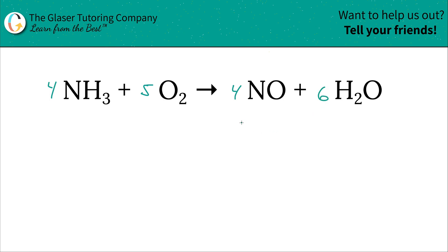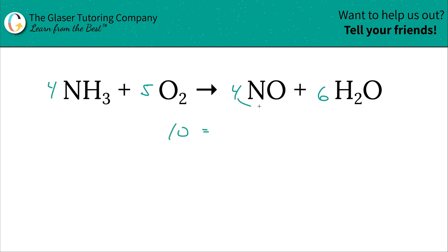Let's verify: nitrogen — coefficient 4, subscript 1 on each side: 4 = 4, balanced. Hydrogen — 4 times 3 = 12 on the left; 6 times 2 = 12 on the right, balanced. Oxygen — 5 times 2 = 10 on the left; 4 times 1 = 4 plus 6 times 1 = 6, totaling 10 on the right. Everything balances. We're done — fully balanced at the lowest whole-number coefficient ratio.